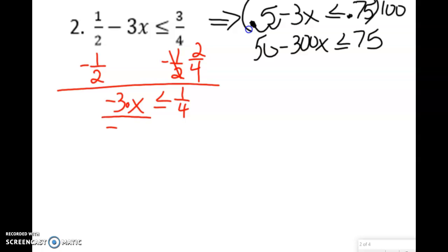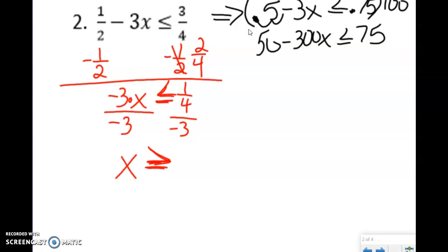In which I'm going to divide by negative 3. And I'm going to divide by negative 3, so that's going to leave me with x. And because I divided by a negative, guess what? This becomes less than or, sorry, greater than or equal to. It was once less than or equal to, so when I divided by a negative, it becomes greater than or equal to. 1 fourth divided by negative 3, put it in your calculator, and it comes out with negative 1 twelfth.